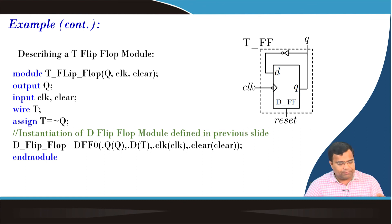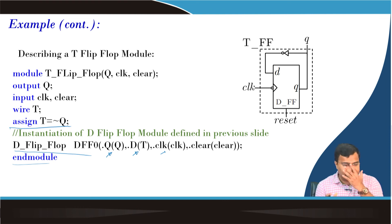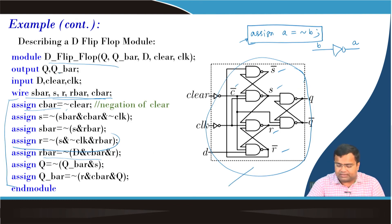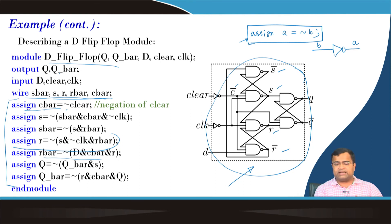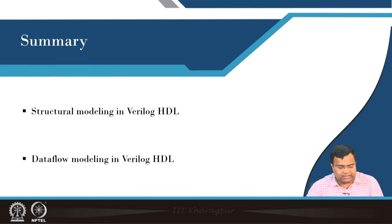For a T flip-flop, you instantiate a D flip-flop and interconnect it with an inverter using an assign statement, calling the D flip-flop module by name using dot notation. A D flip-flop can also be realized by logic gates, but at the behavioral modeling level it is easier because we just use a clock-synchronized operation. In summary, we have discussed structural modeling in Verilog and data flow modeling in Verilog HDL. Thank you very much.